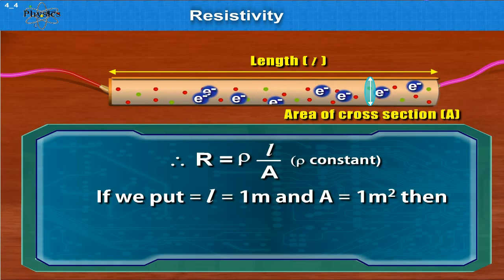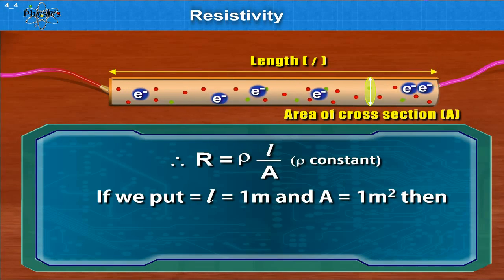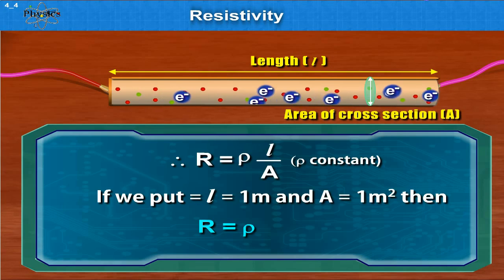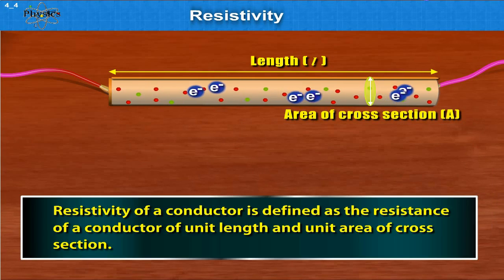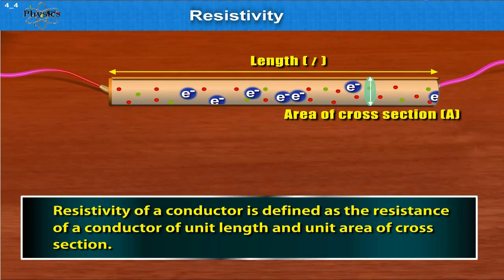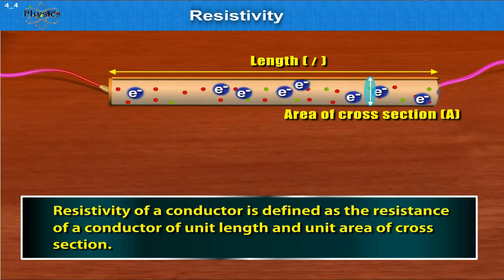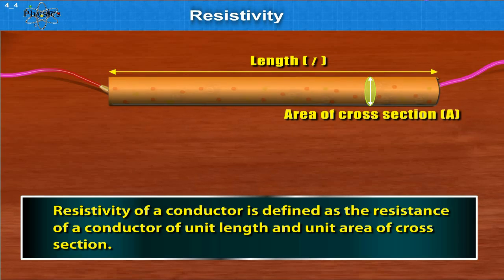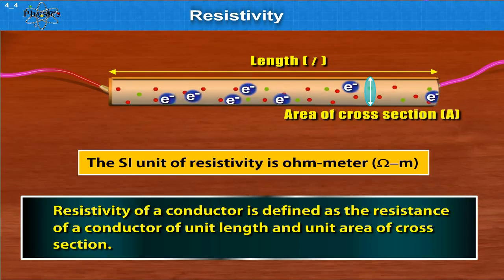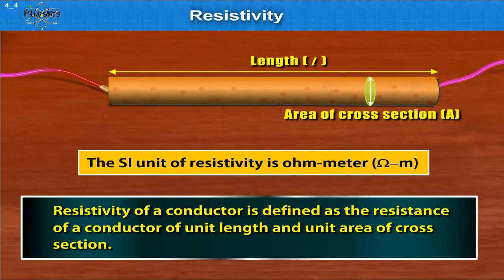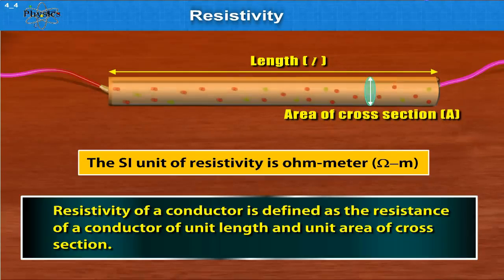If we put L is equal to 1 meter and A is equal to 1 meter square, then R is equal to rho. Thus, resistivity of a conductor is defined as the resistance of a conductor of unit length and unit area of cross section. The SI unit of resistivity is ohm meter.